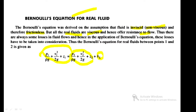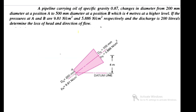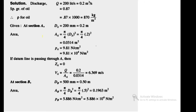Next, problem 1: A pipeline carrying oil of specific gravity 0.87 changes in diameter from 200 mm at position A to 500 mm at position B, which is 4 meters at a higher level. The pressure at A is 9.81 N/cm² and at B is 5.886 N/cm². The discharge is 200 liters per second. Determine the head loss and direction of flow — whether flow is from A to B or B to A.